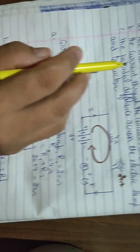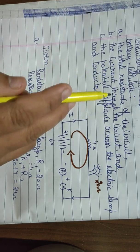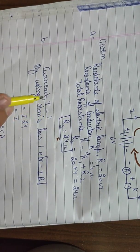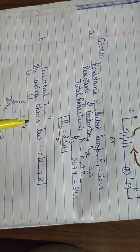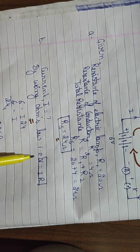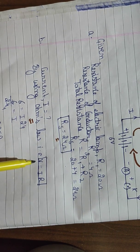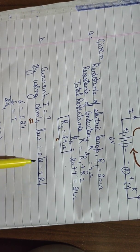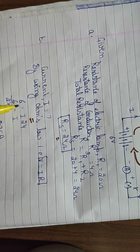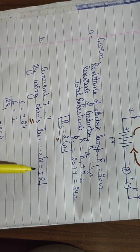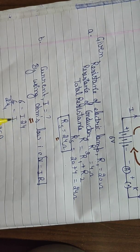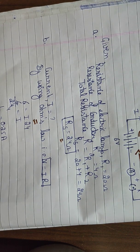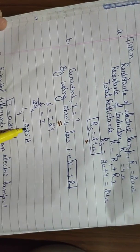For Part B, we need to calculate the total current through the circuit. We will use Ohm's law, one of the very famous formulas: V = IR, where I stands for electric current, R stands for resistance, and V stands for potential difference. The potential difference is 6V, resistance is 24 ohm. Solving for I: I = V/R = 6/24 = 1/4 = 0.25 ampere.